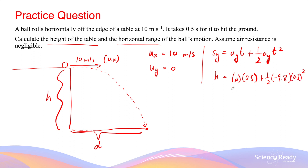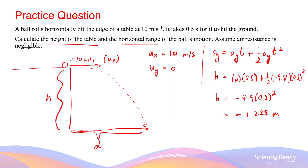Since the first term is 0, the height is going to be −4.9 × (0.5)², which gives −1.225 meters. The vertical displacement is −1.225 meters, which makes sense because the ball ends up below the initial starting point. The height of the table is therefore 1.225 meters.